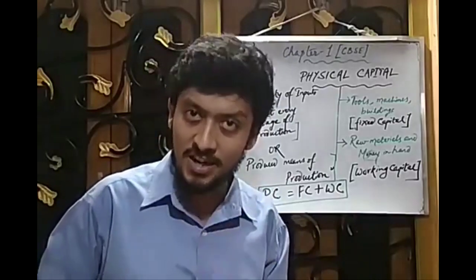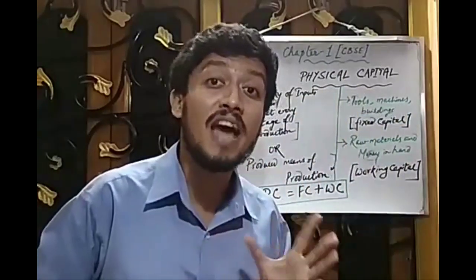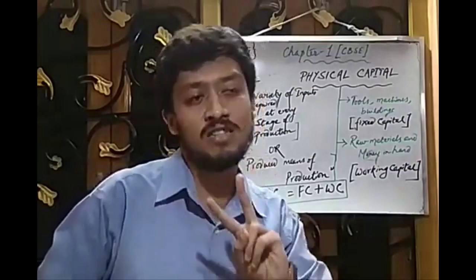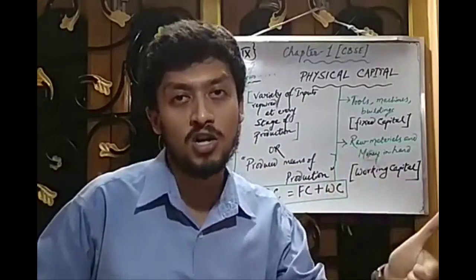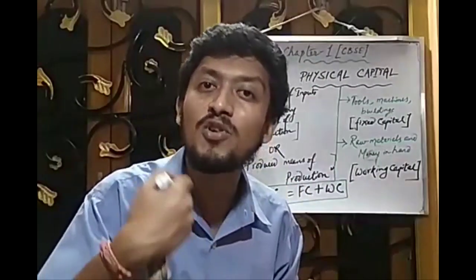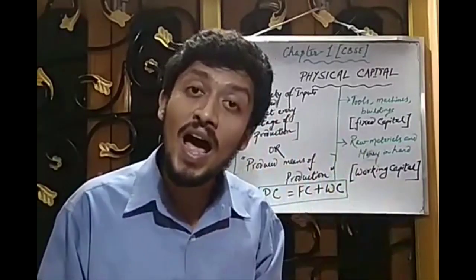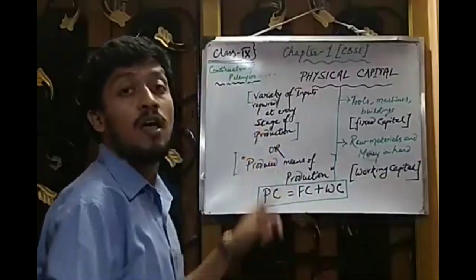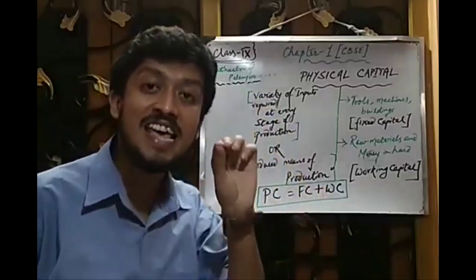Whatever is produced and acts as a means of producing something else is considered as capital in economics. The capital we read here is physical capital. Capital in a broader sense is also known as physical capital, and it has two basic definitions. The first definition is 'produced means of production.' The second definition is: physical capital refers to the variety of inputs that are required in the production process at every stage.